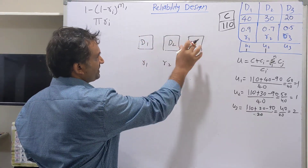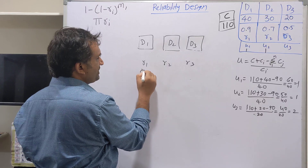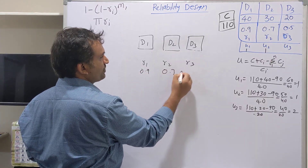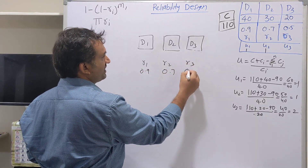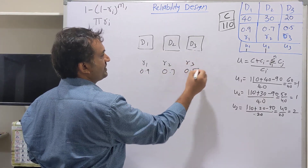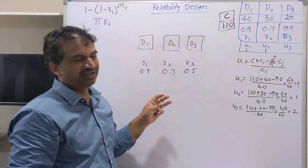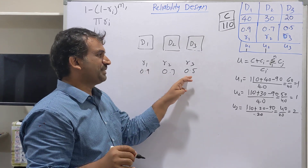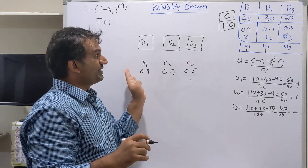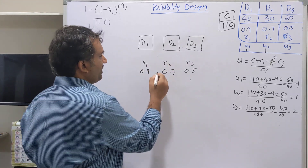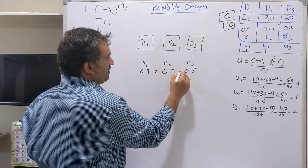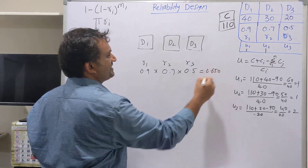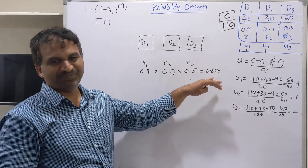For example, the first device reliability is 0.9, second device reliability is 0.7, and third device reliability is 0.5. One copy reliability is this much. The system reliability is the multiplication of all, which is approximately 0.315.